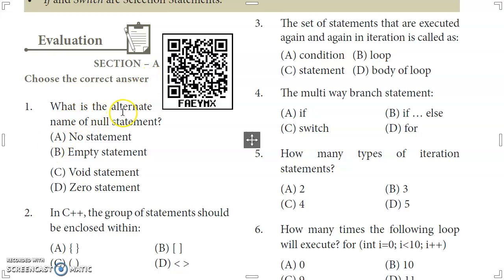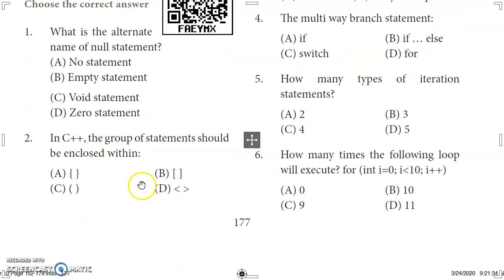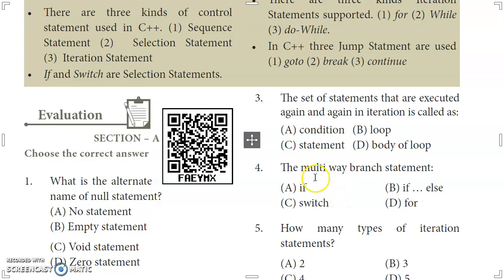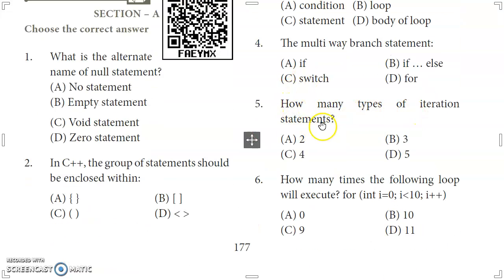First question: what is the alternate name of the null statement? The null statement's alternate name is the empty statement, so option B is the answer. In C++, the group of statements should be enclosed within curly braces, so option A is the right answer. The set of statements executed again and again in iteration is called the body of the loop.